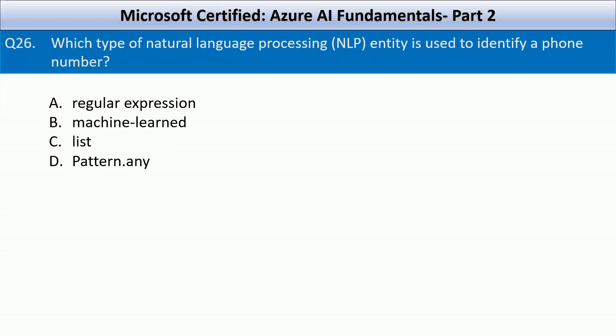Question number 26: Which type of natural language processing entity is used to identify a phone number? Options are regular expression, machine learned, list, or pattern.any. Phone numbers follow a structured format, making them ideal candidates for regular expressions. Machine learned entities are used for unstructured recognition like names or organizations. Lists are best for predefined values. Pattern.any matches any text pattern but does not provide structured extraction like regular expressions do.